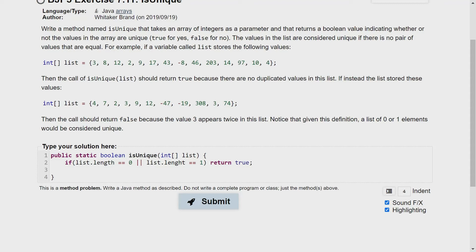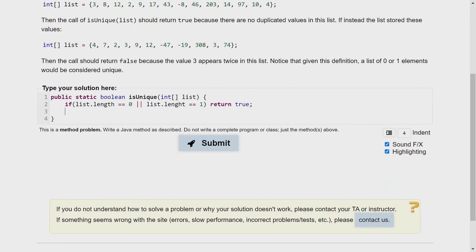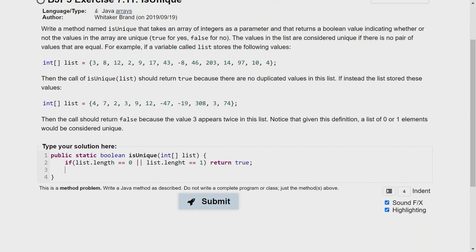So if you think about it for a second, you'll realize that you need one for loop that's going through the entire array once, and then another for loop. So a nested for loop inside of that for loop that basically goes through the entire array one more time to see if there's any duplicates.